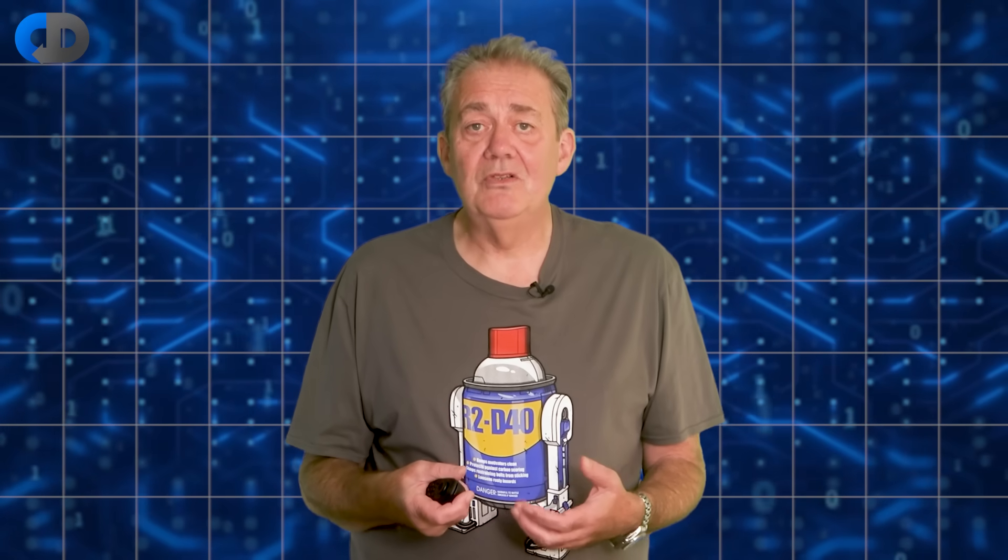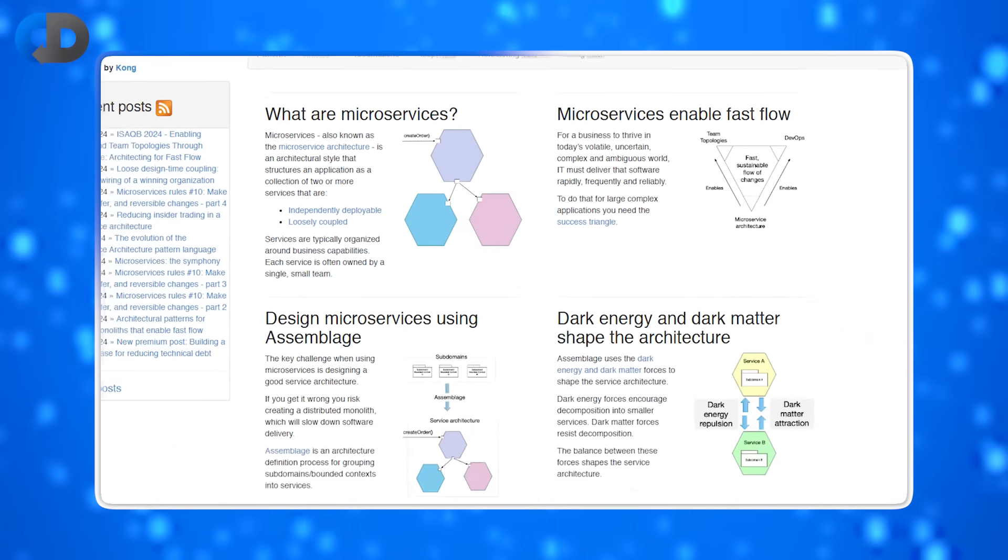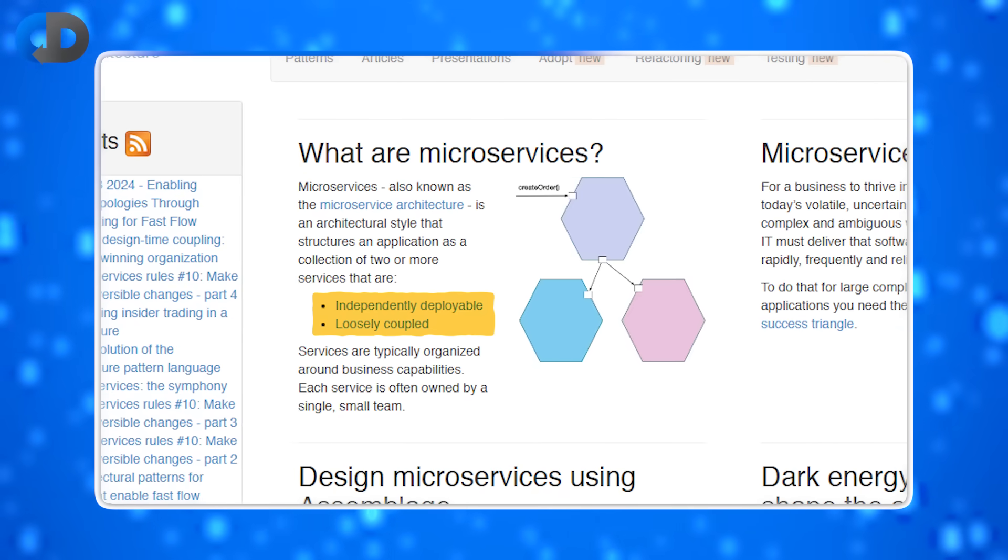So the sense in which microservices represents technical debt is that we implement more complex code that is less computationally efficient and that works in ways that are less organizationally efficient, unless these things are truly independently deployable. As the definition for microservices says they should be, the problem here is once again one of semantic diffusion.